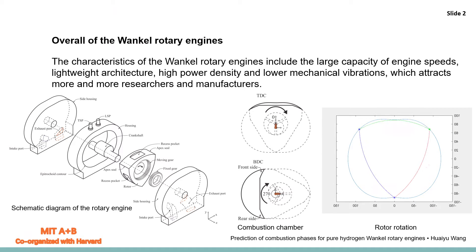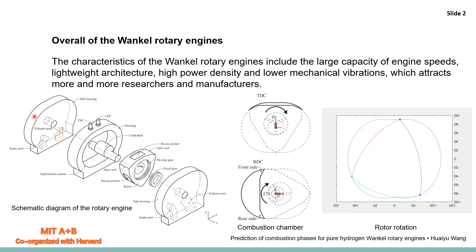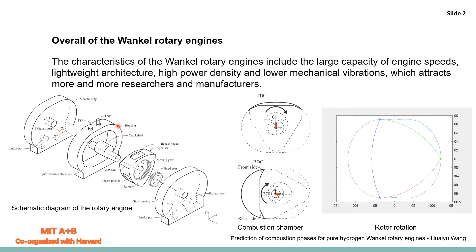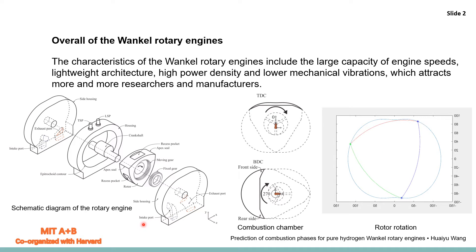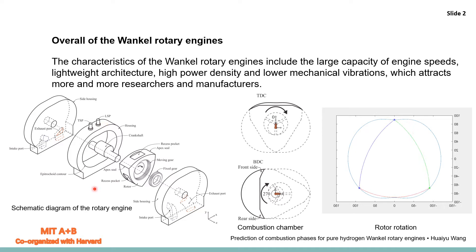The left picture is the diagram of the rotary engine. It contains four parts: one side housing, rotor housing, and two side housings. It contains two intake parts, two exhaust parts, two spark plugs, and one crankshaft with three chambers.